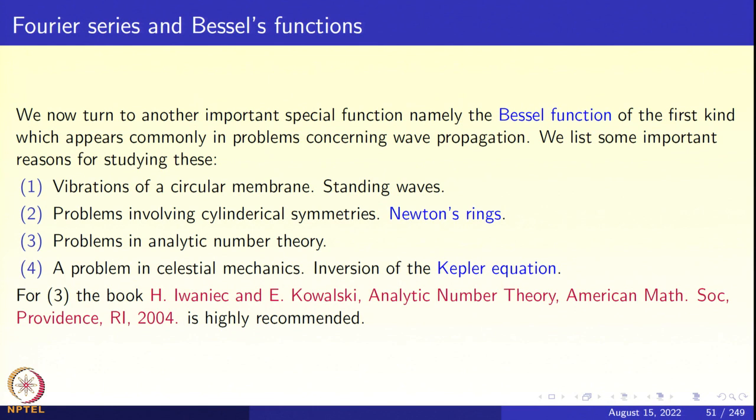Apart from wave phenomena, Bessel functions also appear in unexpected places, such as problems in analytic number theory. The book by Iwaniec and Kowalski, Analytic Number Theory, published by the American Mathematical Society in 2004, is highly recommended for seeing how Bessel functions appear there. We shall also look at a very special problem in celestial mechanics — the inversion of the Kepler equation — and how Bessel functions can be used.